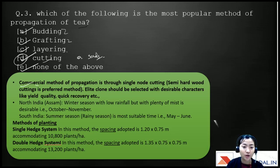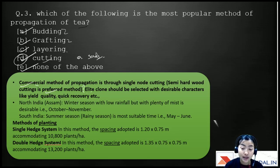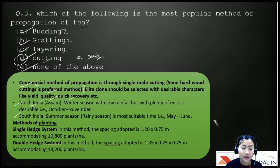An elite clone with desirable characters like yield, quality, and quick recovery is selected and used as cuttings. In North India, cuttings are done during winter with low rainfall but plenty of mist — from October to November. In South India, it's done in the summer or rainy season — May and June.